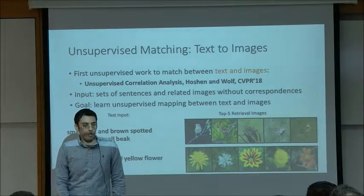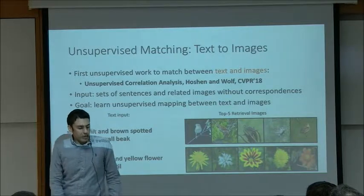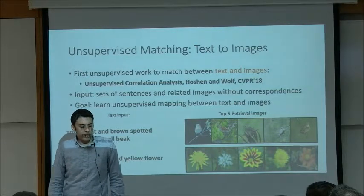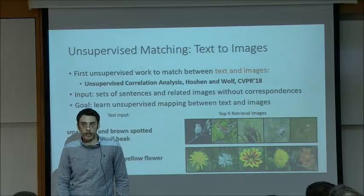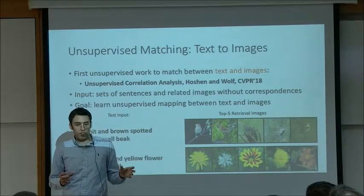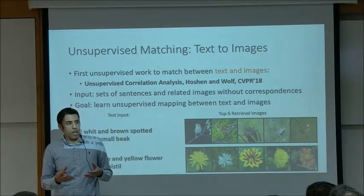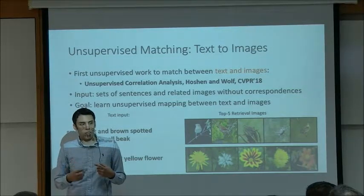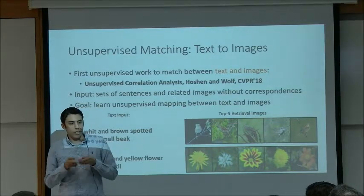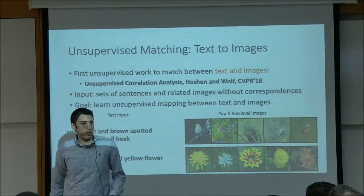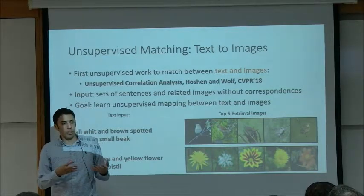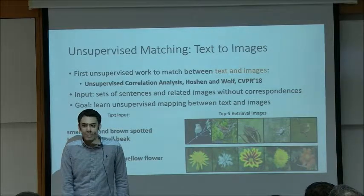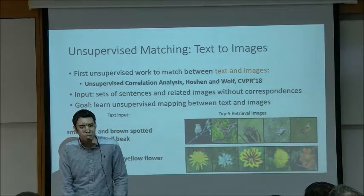We also did work on finding adversarial analogies between very different domains. In joint work with Leo Wolfe, presented at CVPR, we presented the first unsupervised work to match between text and images. The input was a set of sentences describing birds and a set of images containing birds. The objective was to learn a function that could match between those sentences and images. Our method was able to do it by matching distributions, and it worked for both birds and flowers.